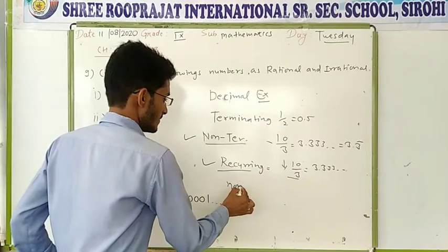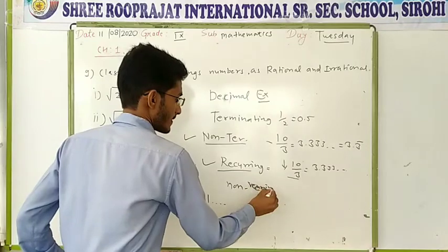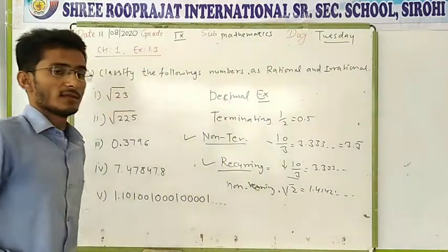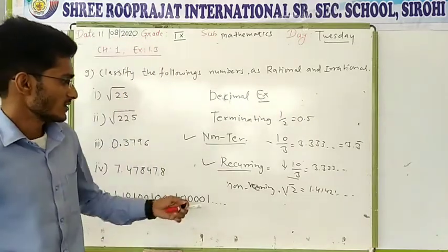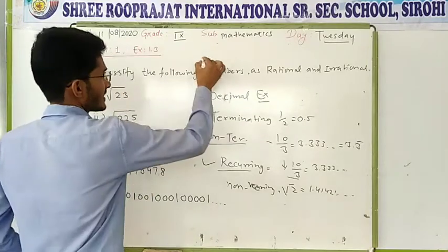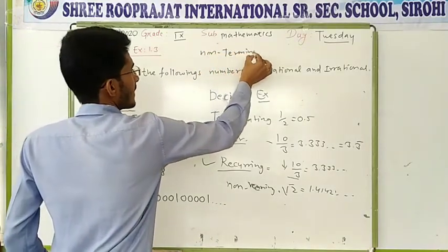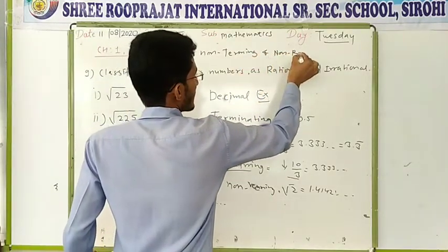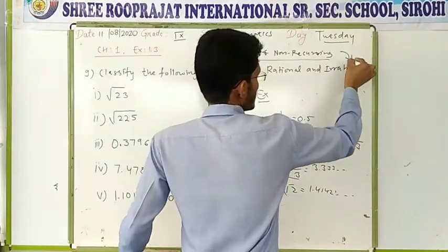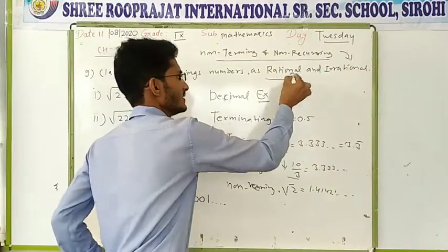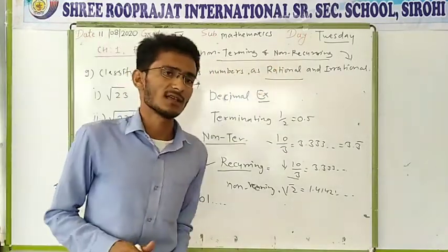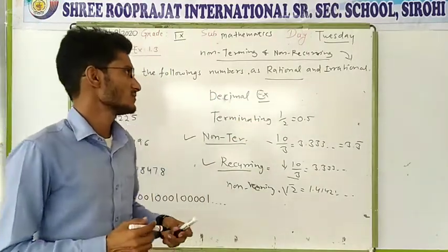Next one is non-terminating non-recurring. Like root 2 — 1.4142 and continuing, we get a number in decimal expansion but you will never get the same number. So that is called non-recurring, that means the number is not repeating itself. So a number which is non-terminating and non-recurring is known as irrational, and other numbers are known as rational number.